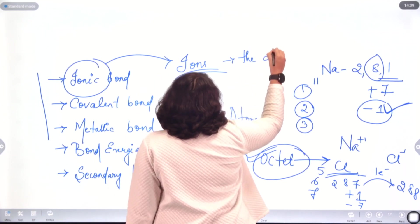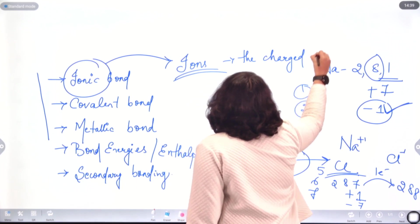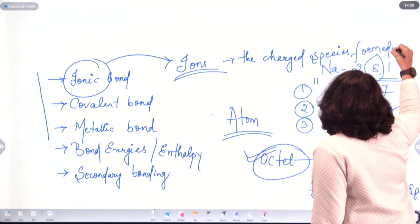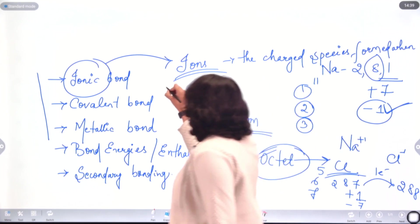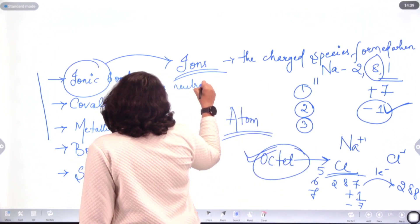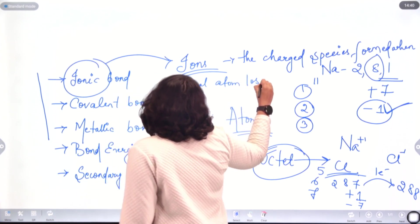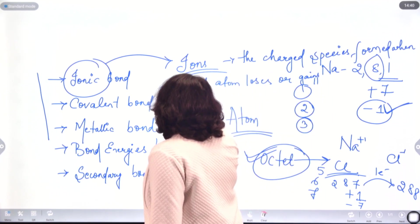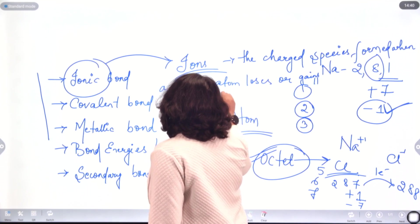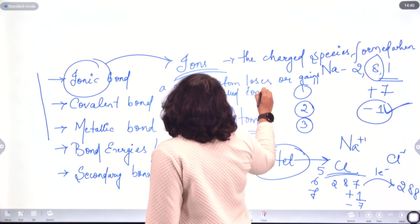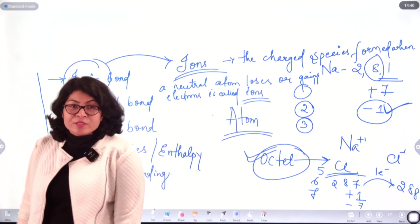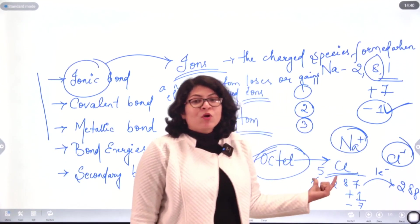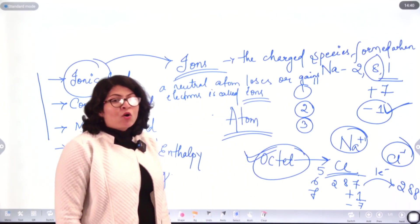When a neutral atom either loses or gains electrons, it is converted to a charged species, and these charged species are nothing but ions. The charged species formed when a neutral atom loses or gains electrons is called an ion. Ions can be positive or negative — for example Na⁺ or Cl⁻. Positive ions are called cations and negative ions are called anions.